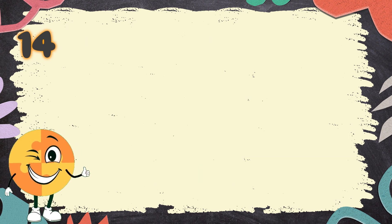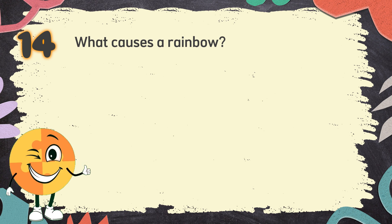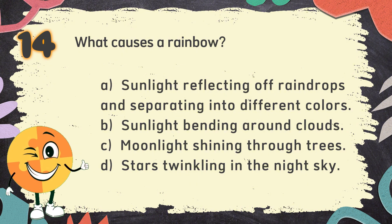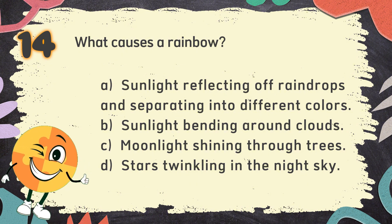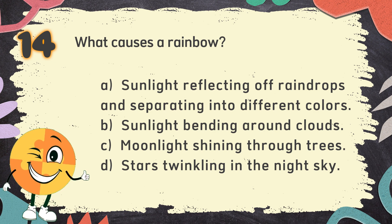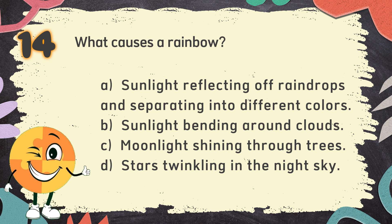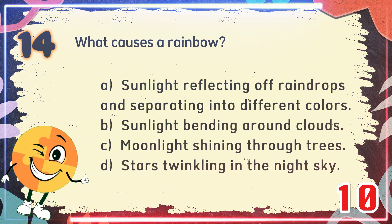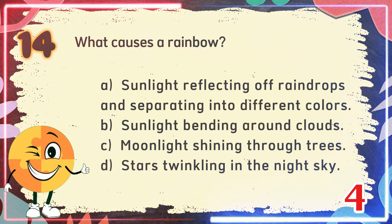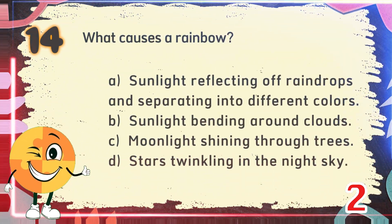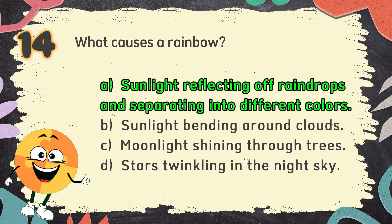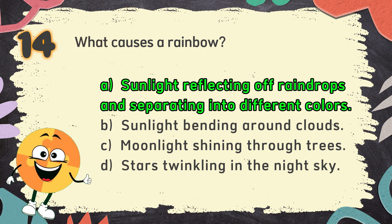Number 14. What causes a rainbow? The choices are: A. Sunlight reflecting off raindrops and separating into different colors, B. Sunlight bending around clouds, C. Moonlight shining through trees, D. Stars twinkling in the night sky. The correct answer is A. Sunlight reflecting off raindrops and separating into different colors.